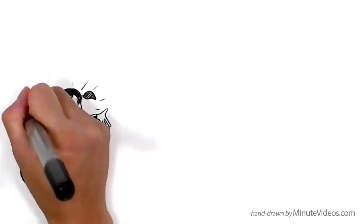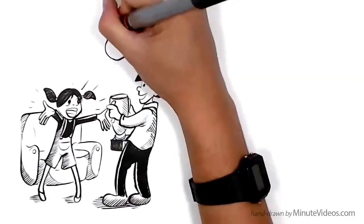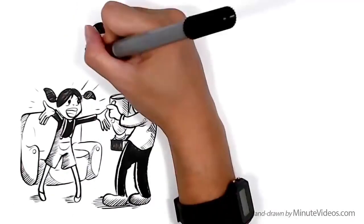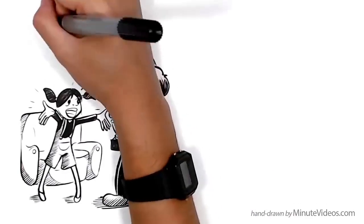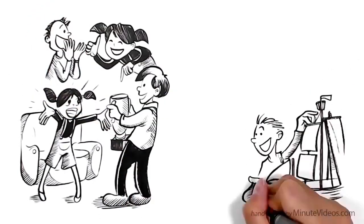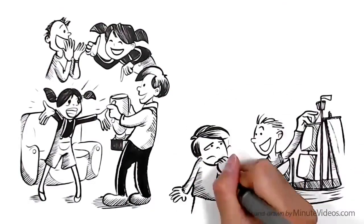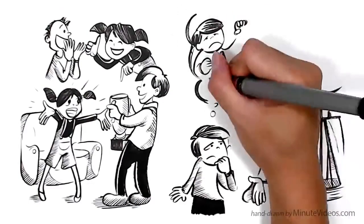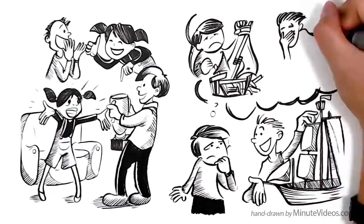Ann likes to see others succeed. It inspires her. She knows that if she motivates her friends to get better, she herself is likely to grow too. If his friends try new things and succeed, Jay feels threatened. He's afraid that their success will put pressure on him to do more with his life too.